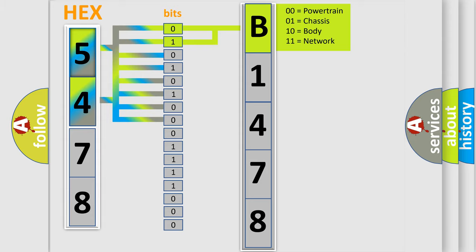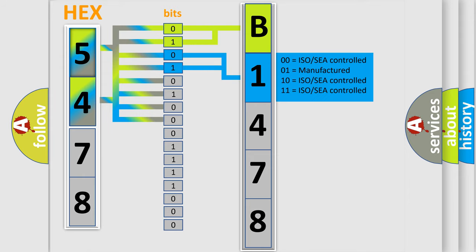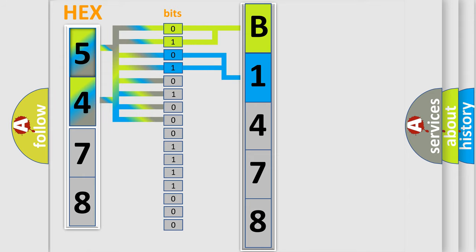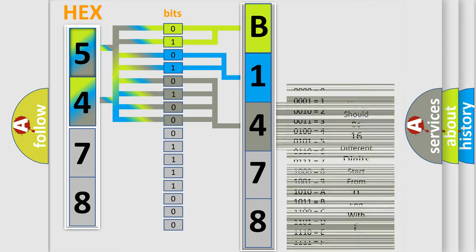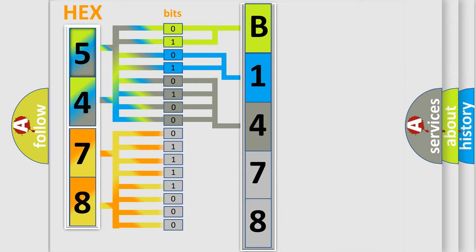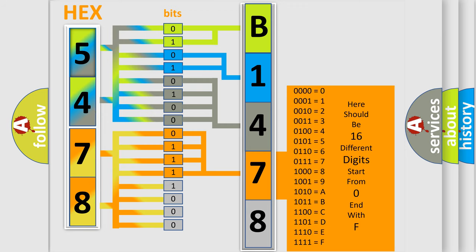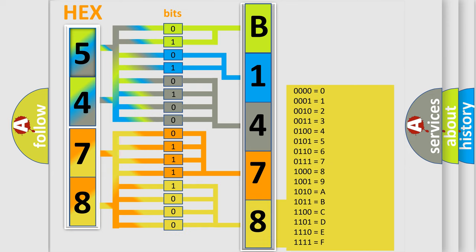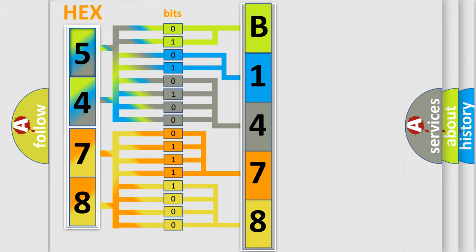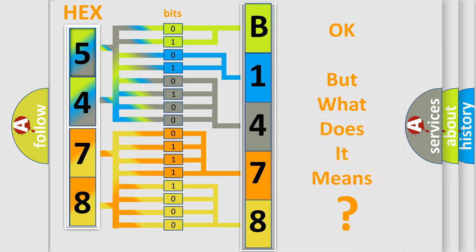By combining the first two bits, the basic character of the error code is expressed. The next two bits determine the second character. The last four bits of the first byte define the third character of the code. The second byte is composed of a combination of eight bits. The first four bits determine the fourth character of the code, and the combination of the last four bits defines the fifth character. A single byte conceals 256 possible combinations. We now know in what way the diagnostic tool translates the received information into a more comprehensible format.